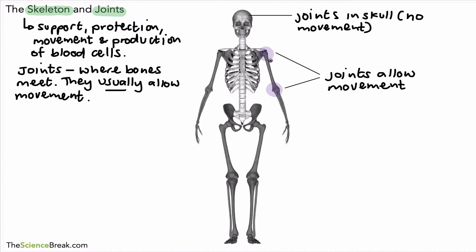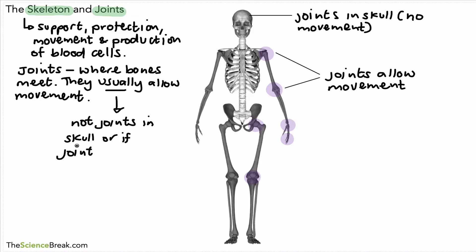We have joints in the elbow, the shoulder, the hip, knee, wrist, fingers, and various other places in the body — so these allow for movement. But we did say they usually allow for movement, so it's worth noting they don't allow movement in the skull. And in fact, if you have injured a joint or if the joint is damaged as a result of a disease, that's going to reduce or eliminate movement as well.